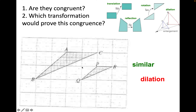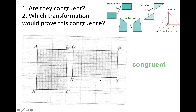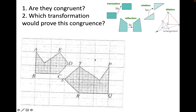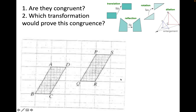They have the same angles but do not have the same size. The next pair is congruent — you can rotate one to overlap and prove congruence. The following pair is not congruent because they are different sizes; they are the same shape, however, so they are similar, and a dilation or enlargement could be used to make one the same size as the other. The last pair is congruent, and you can use a translation — a slide — to show that.